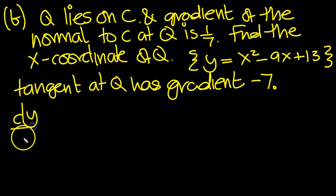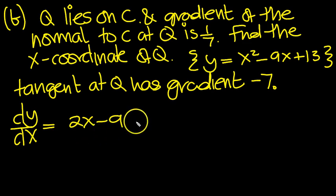We know that the dy/dx function, we've done it above, is 2x minus 9. Easy to differentiate anyway. So when does that equal, when is the tangent minus 7?